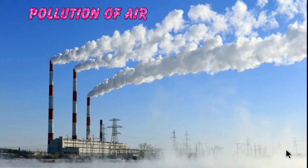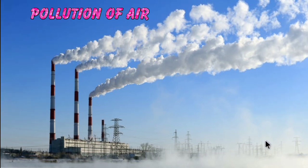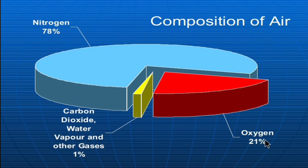The eighth major hazard is air pollution. Air is a mixture of several gases: nitrogen (78%), oxygen (20.95%), and carbon dioxide (0.03%), along with trace gases like argon, neon, helium, krypton, hydrogen, ozone, xenon and methane.